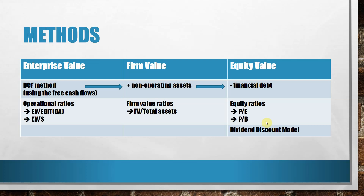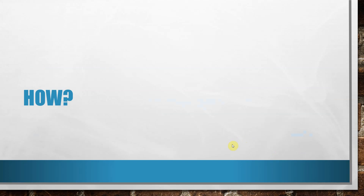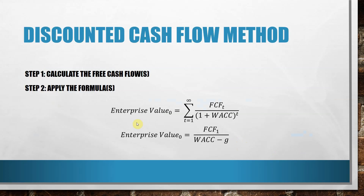Another way to directly calculate equity value is the dividend discount model, which uses dividends as the name suggests. The discounted cash flow method is a two-step process: you calculate the free cash flows and then you discount these cash flows using the appropriate formulas to get the enterprise value.